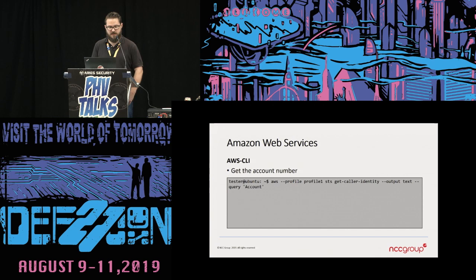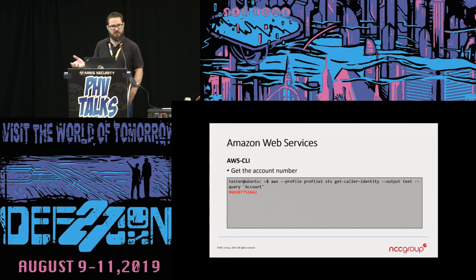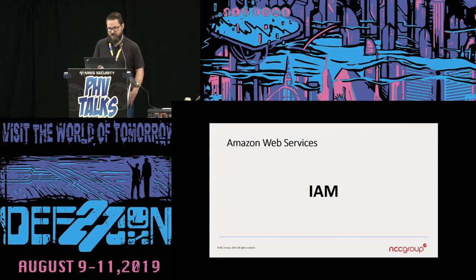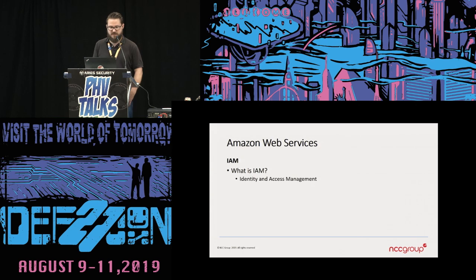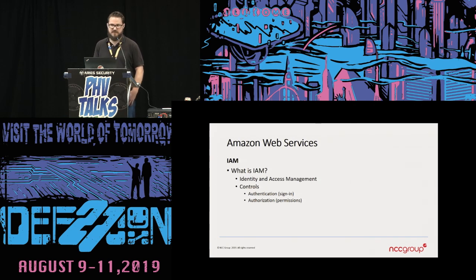When assessing an AWS account, the first thing we want to do is dump out the account number so we know which one we're looking at and can apply it to any findings. We'll run this command and get the account number, which we'll use for reporting to identify what account the findings go to. The first service we're going to look at is IAM — the Identity and Access Management Service — which deals with authentication and authorization against resources.